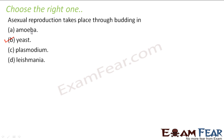What happens in amoeba? Amoeba undergoes binary fission. What happens in plasmodium? In plasmodium it undergoes multiple fission. In Leishmania also we have binary fission. So all of them undergo fission — the correct answer is yeast.